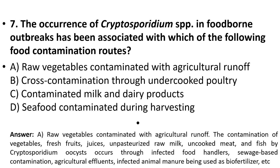Contamination of vegetables, fresh fruits, juices, unpasteurized raw milk, uncooked meat and fish by cryptosporidiosis can occur through infected food handlers, sewage-based contamination, agricultural effluents, and infected animal manure used as biofertilizers.